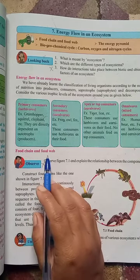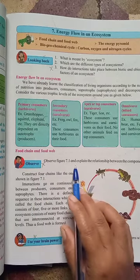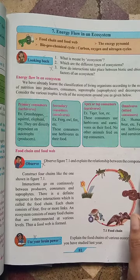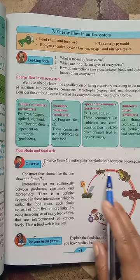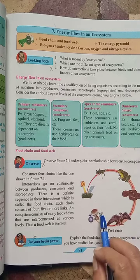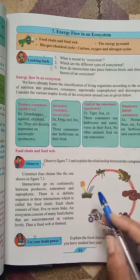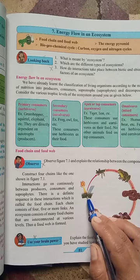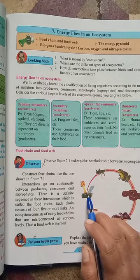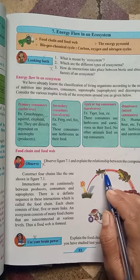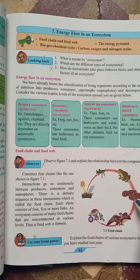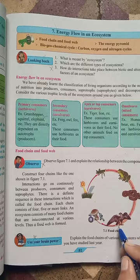Food chain and food web. Observe figure 7.1 and explain the relationship between the components. Here in figure 7.1, which shows the food chain, all organisms depend on each other. The plants produce their own food with the help of sunlight and chlorophyll. Grasshoppers depend on plants for food, then frogs depend on grasshoppers, snakes depend on frogs, and eagles depend on snakes — this is the apex carnivore. No other animals feed on the top consumers.